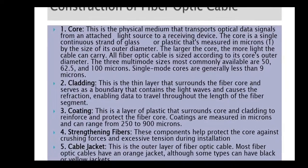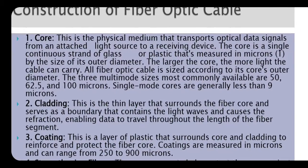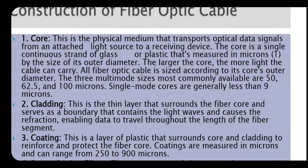Construction of the fiber optic cable. Core: this is the physical medium that transports the optical data signal from an attached light source to the receiving device. The core is a single continuous strand of glass or plastic measured in microns by the size of its outer diameter. The larger the core, the more light can be carried. The three multimode sizes most commonly available are 50, 62.5, and 100 microns. Single-mode cores are generally less than 9 microns.